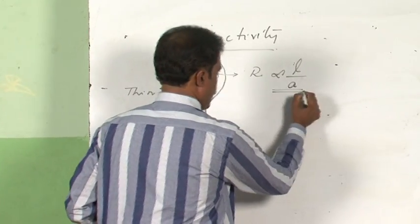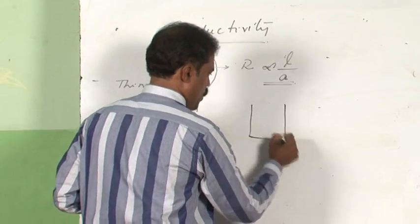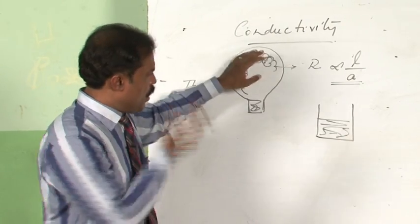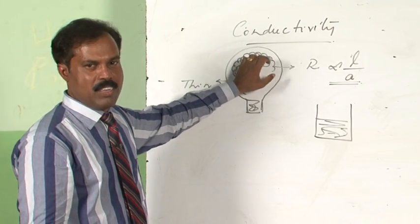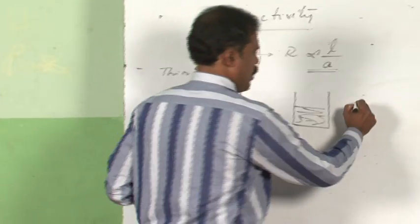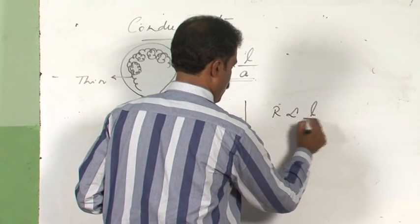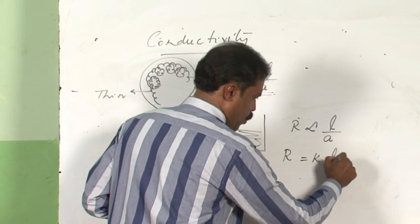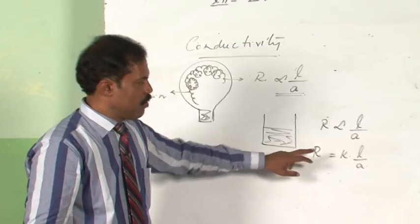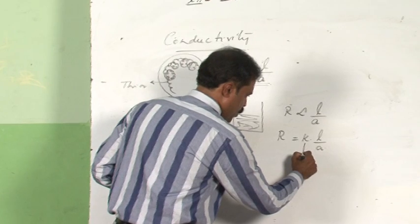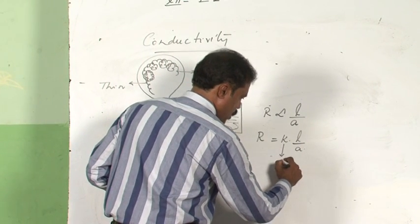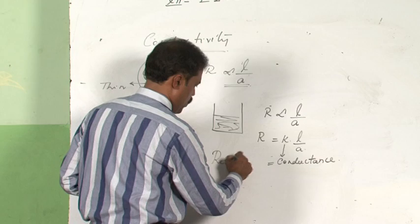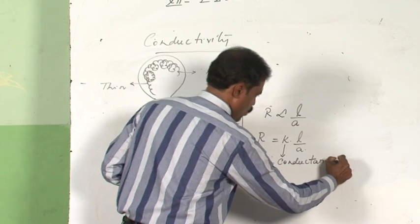Now the question is: is this applicable to a solution also? As chemistry students, we are more interested in solutions, not solid conductors. In solutions too, resistance is directly proportional to the length of the solution and inversely proportional to the area of the solution. So we can write R = ρ × (L/A), where ρ is the constant of proportionality called resistivity.